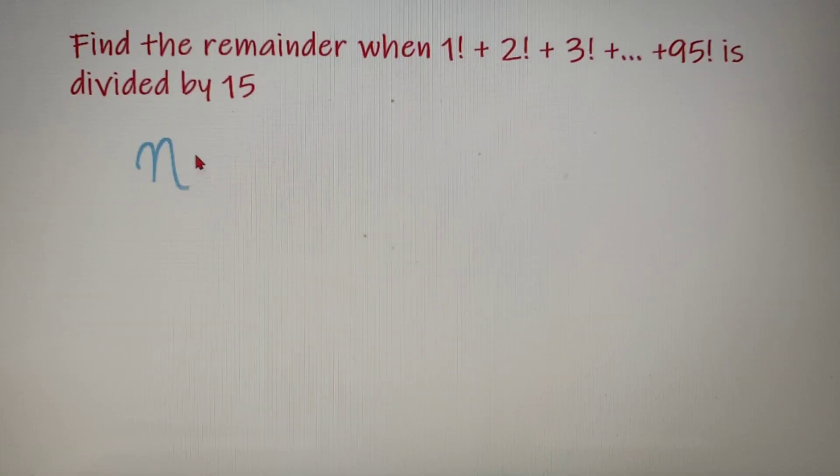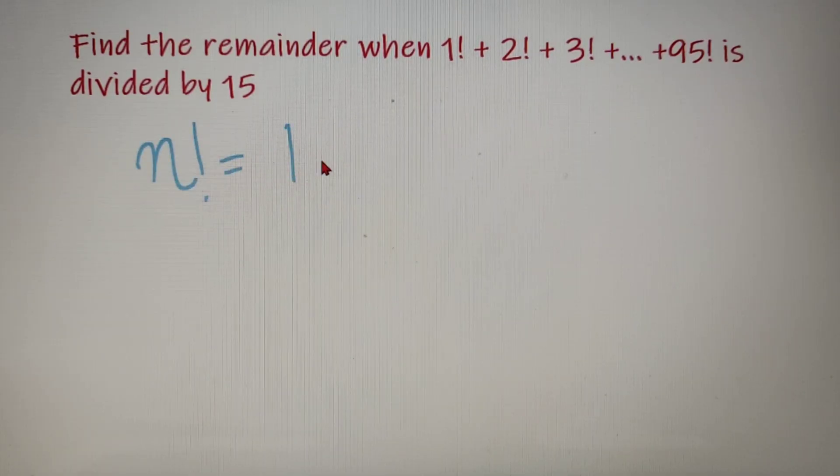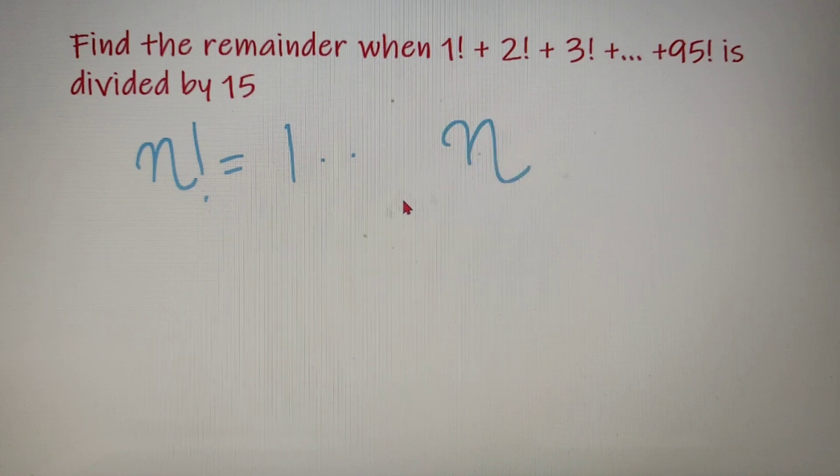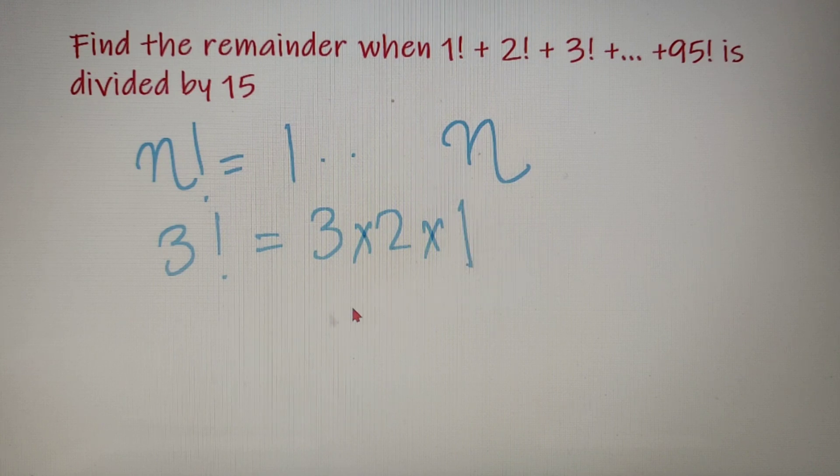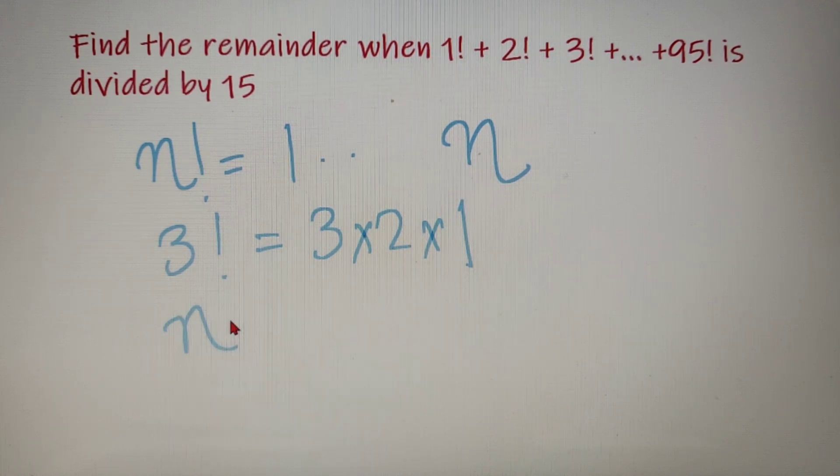So factorial of a number is basically the product of all the numbers from the number 1 up to the number n. For example, 3 factorial is equal to 3 into 2 into 1. So all the numbers from 1 to the number n is equal to n factorial.